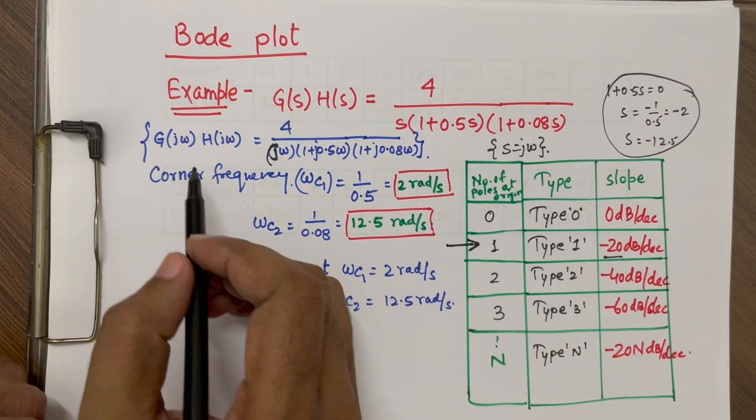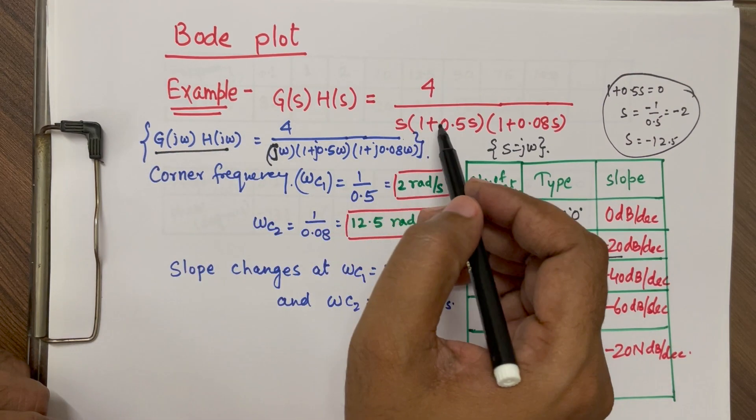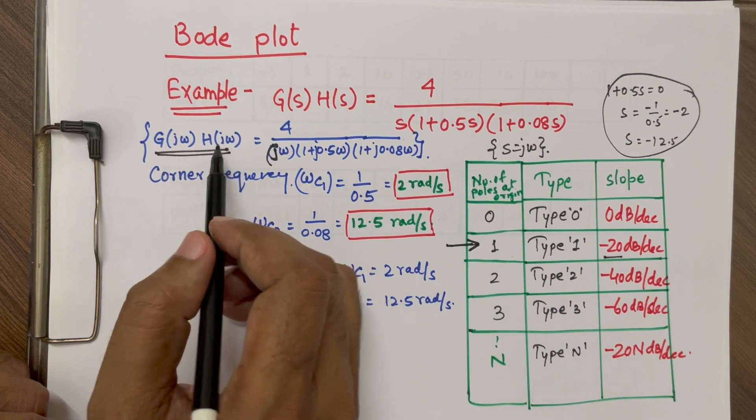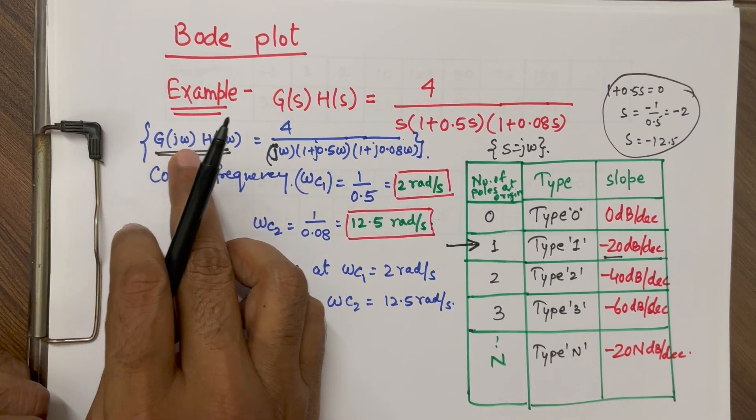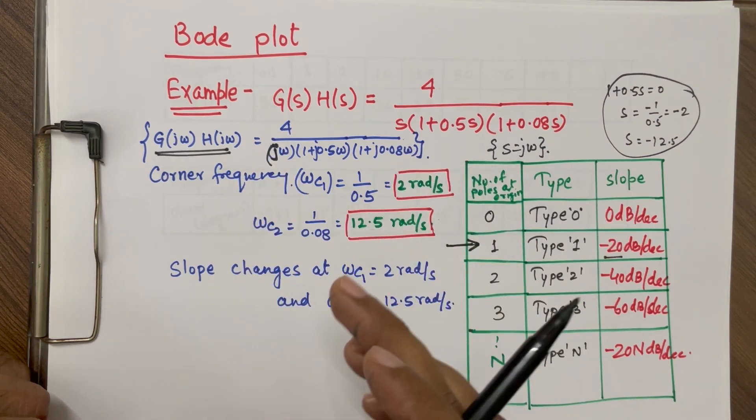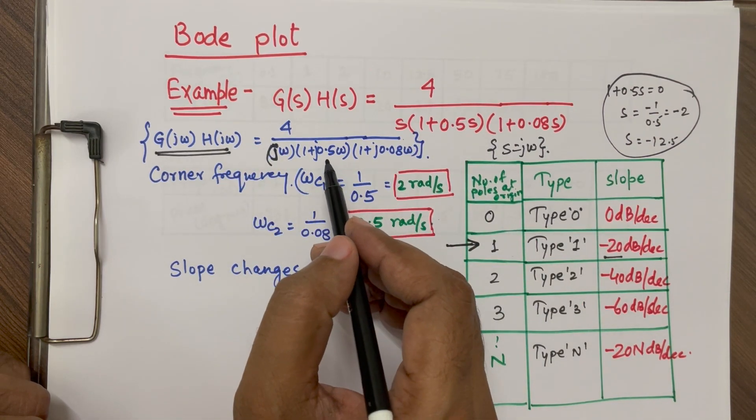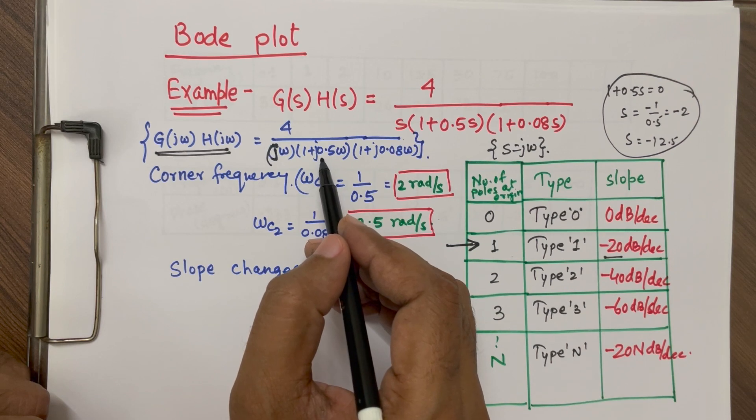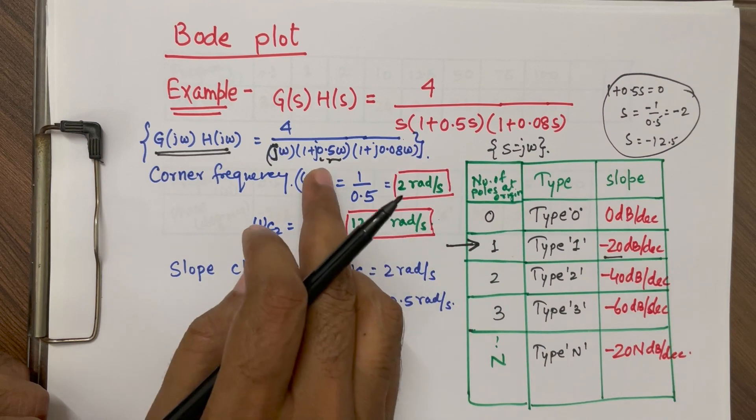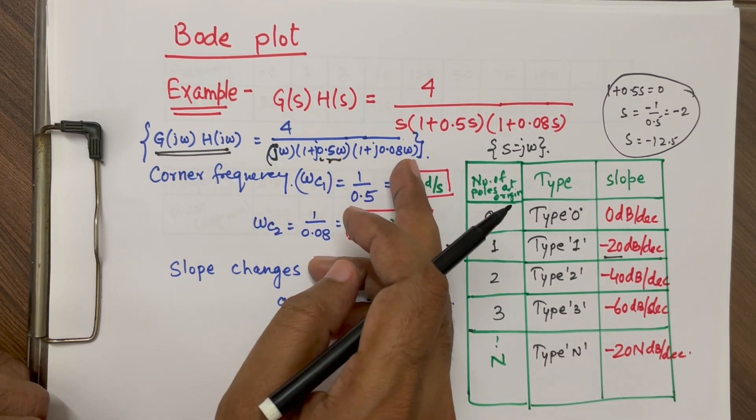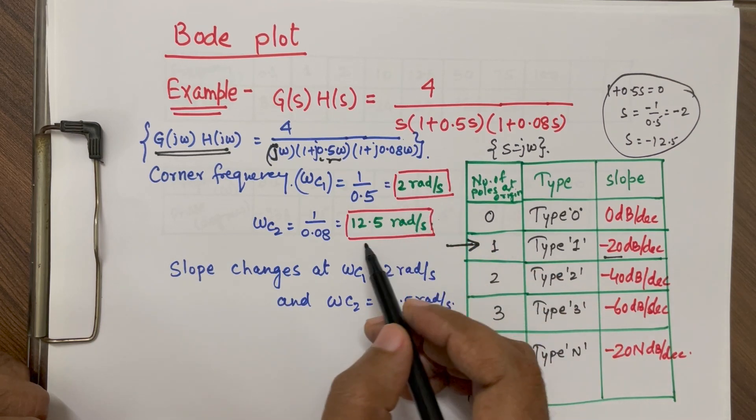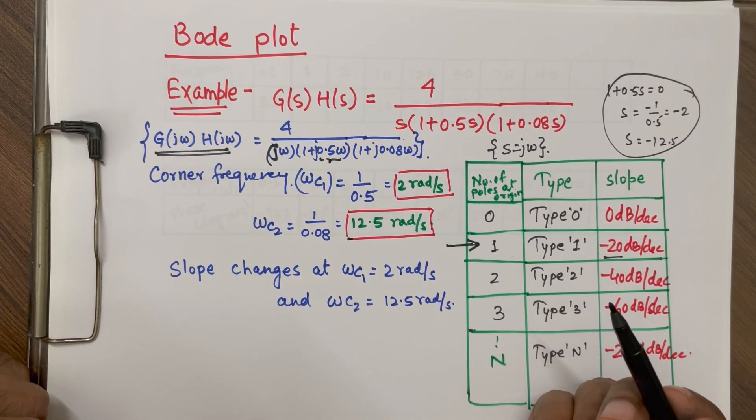Now few more points, we are going to convert this by replacing S as j omega and write as the frequency function g j omega into h j omega, which is given by this. For corner frequency, we are going to equate this quantity with 1 and we will get the corner frequency. If I equate 0.5 omega equal to 1, omega will become 2. So these are corner frequency, 2 radian per second, 12.5 radian per second.